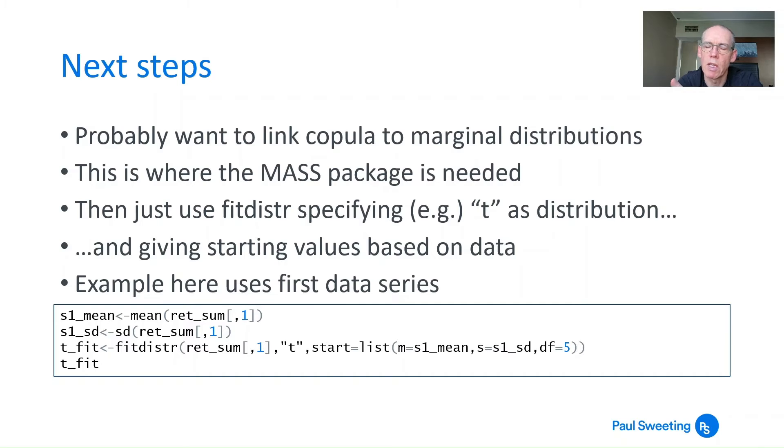With the MASS package, we use fitDistr, fit distribution, and specify whatever distribution we want. To do this we need starting values based on the data. The example uses the first data series. It looks at values S1_mean, the mean of that series, and S1_SD, the standard deviation, as starting points for the fit for the data.